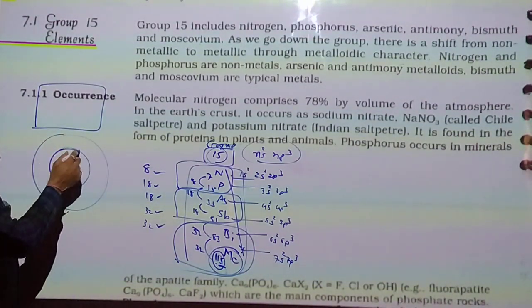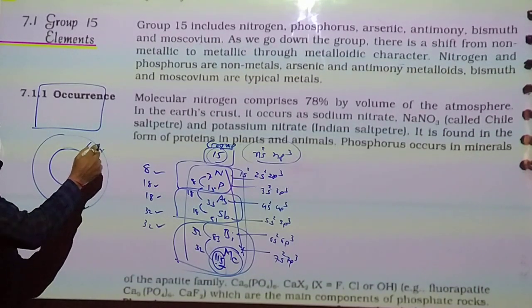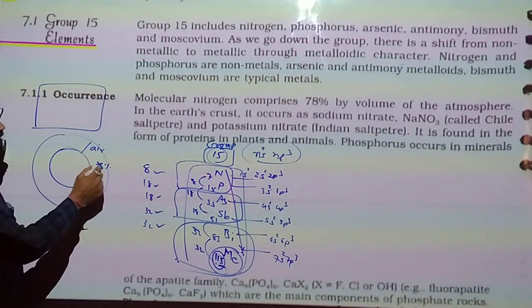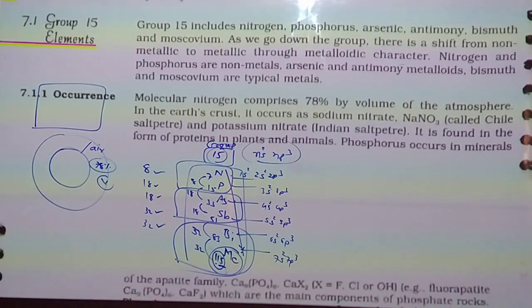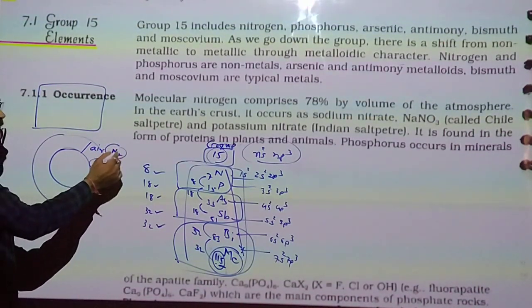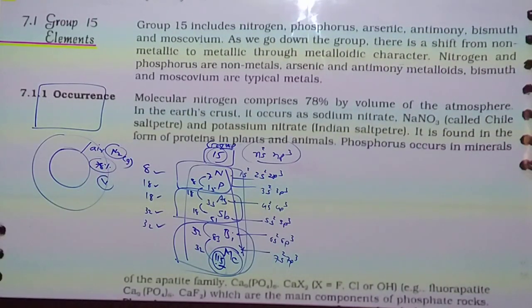Molecular Nitrogen comprises 78% by volume of our atmosphere. In earth's crust there is air, in the air by volume, 78% due to dinitrogen gas. In the molecular form N2, occurrence of the element.